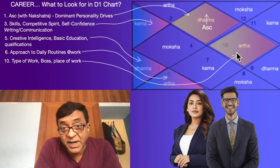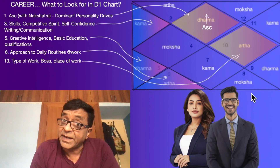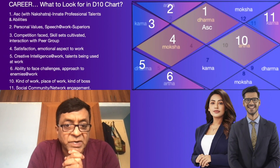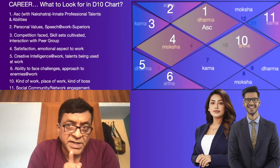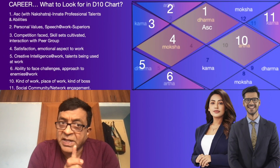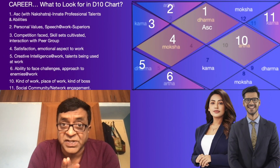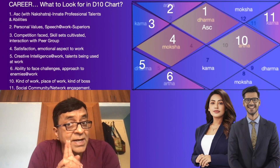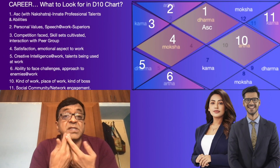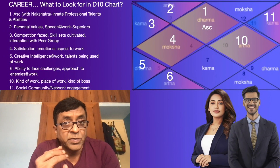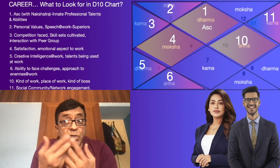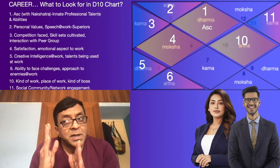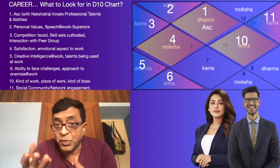Now let's look at what the D10 chart shows and what areas to focus on there. In the D10 chart, the ascendant with the nakshatra shows your innate professional talents and abilities. Innate means something natural to you — you don't have to learn it, go to a seminar, or read a self-help book. This is innate to you; you are born with it. What you do with the talent or don't do is entirely up to you — no chart will ever dictate that.